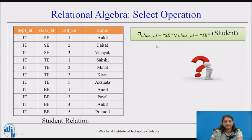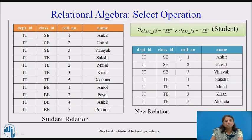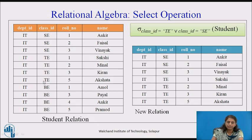Now consider the second example: select where class ID equals SE or class ID equals T from student. Pause the video and try to find the output relation. We find the records with class ID equal to SE and then with T. These are the records having class ID either SE or T, and that is the new relation we obtain.